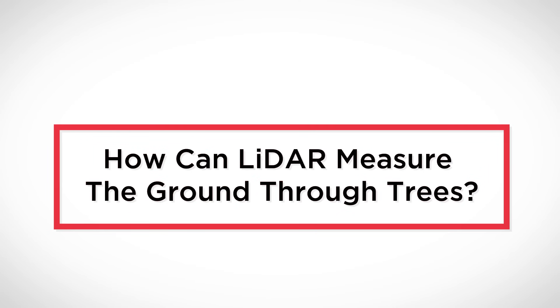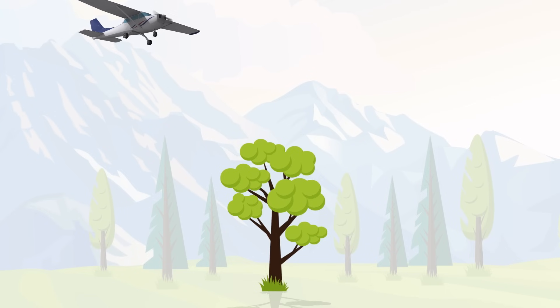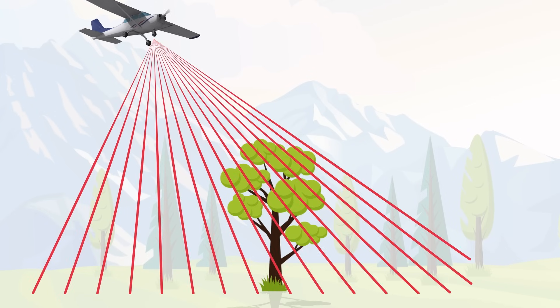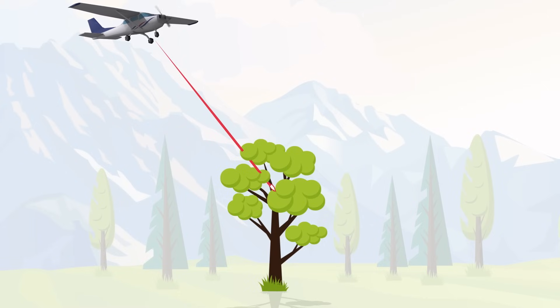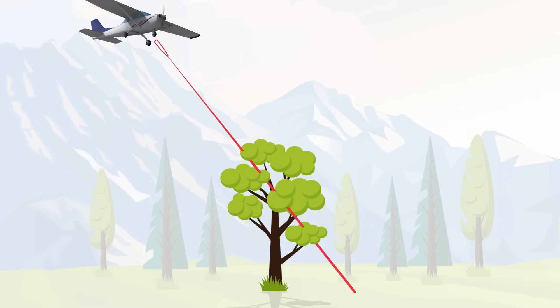So how can LiDAR measure the ground through trees? A laser pulse emits light energy as a bundle of photons. As these photons move towards the ground, they hit objects such as buildings, trees, and ground vegetation. In the case of trees and vegetation, some of the photons reflect off the branch and return immediately to the sensor. However, some of the photons actually pass through the gaps in the tree, striking other features like lower branches or even the ground before returning to the LiDAR sensor. In this way, multiple reflections may be recorded from one pulse of light. In the LiDAR industry, this is known as multiple returns.